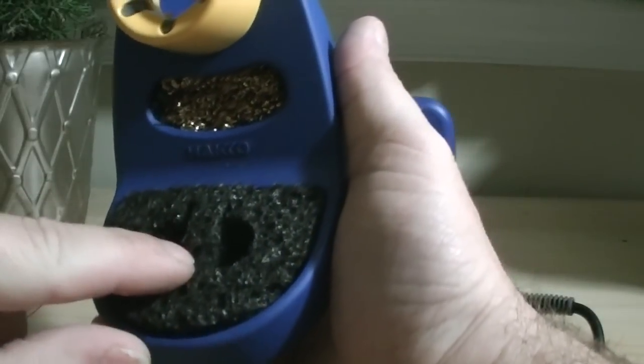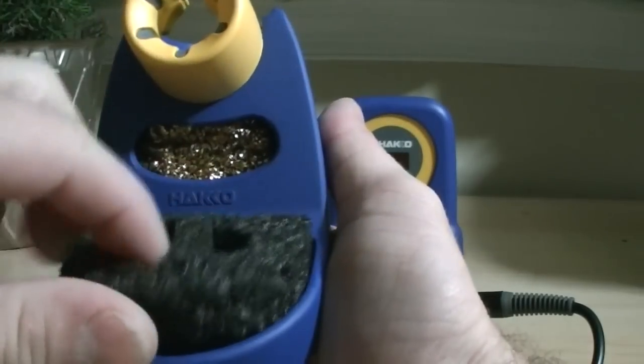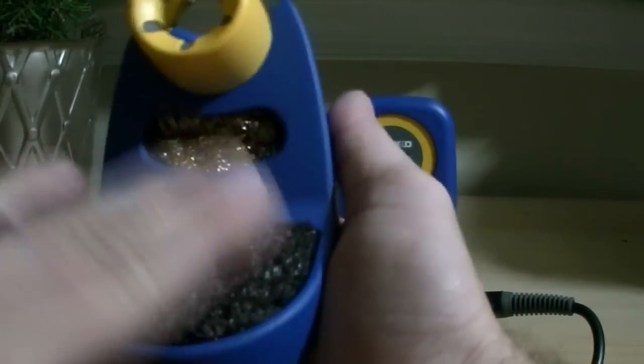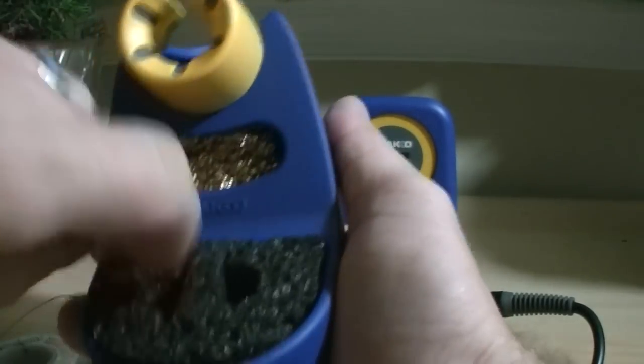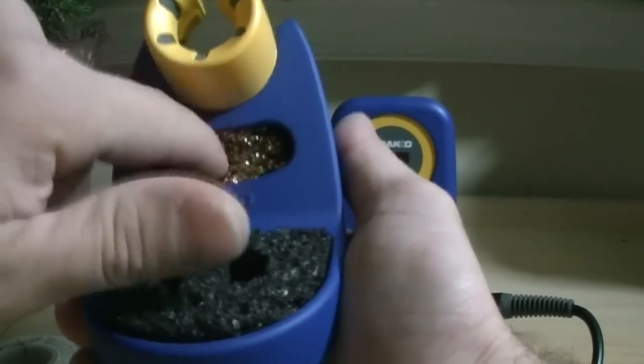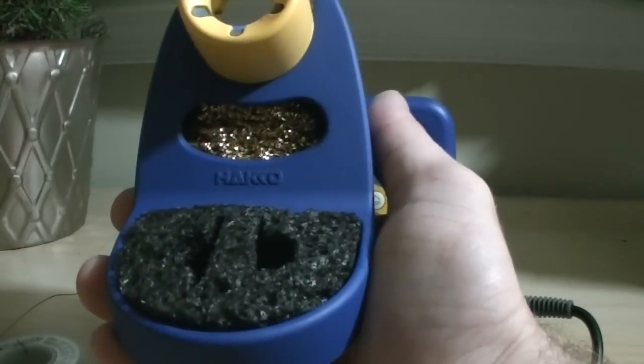The holder comes with a sponge that you can wet - there's actually a reservoir you can fill with water if you're doing a lot of soldering during the day to keep your sponge nice and wet. It also has brass wiring that will safely clean your tip without scratching it.